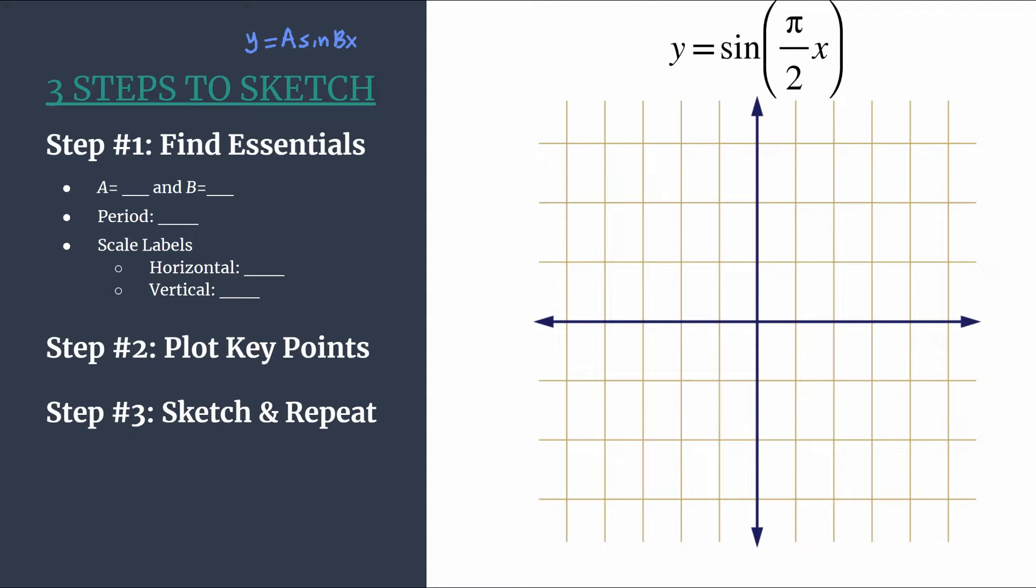So step one, we find the essentials. First, we need to identify a and b. In our equation, our understood coefficient out front is one, so a is one. That means our amplitude is one.